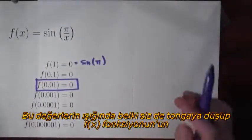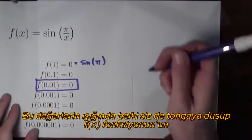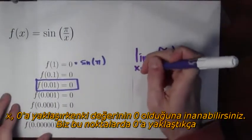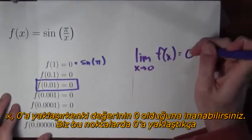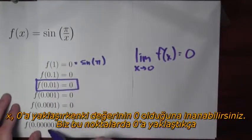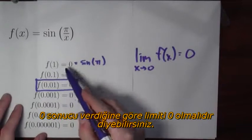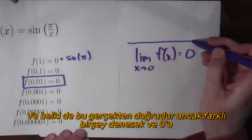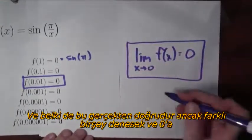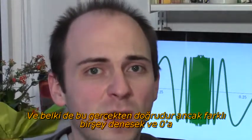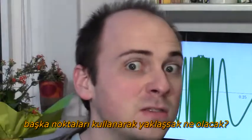In light of this evidence, you might be tricked into believing that the limit of f(x) as x approaches 0 is equal to 0. After all, all of these points are approaching 0, and the function evaluated at these points is 0. So maybe that means that this is true. So it looks like the limit is equal to 0. But what happens if I look at some other points?